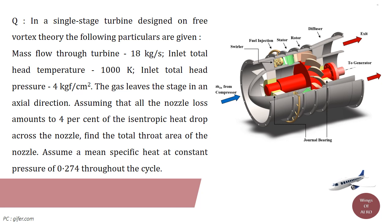Mass flow through turbine is 18 kg per second. Inlet total heat temperature is 1000 K and the inlet total heat pressure is 4 kg force per cm². The gas leaves the stage in an axial direction.